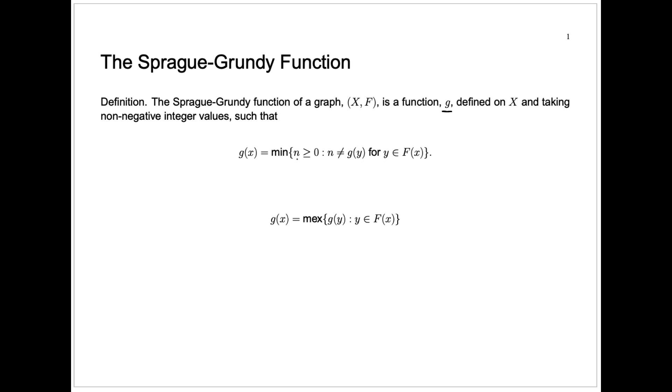is the minimum positive number, which has the property that it's not equal to any of the values of the same Sprague-Grundy function for any follower of that node, that's for any y in f of x.